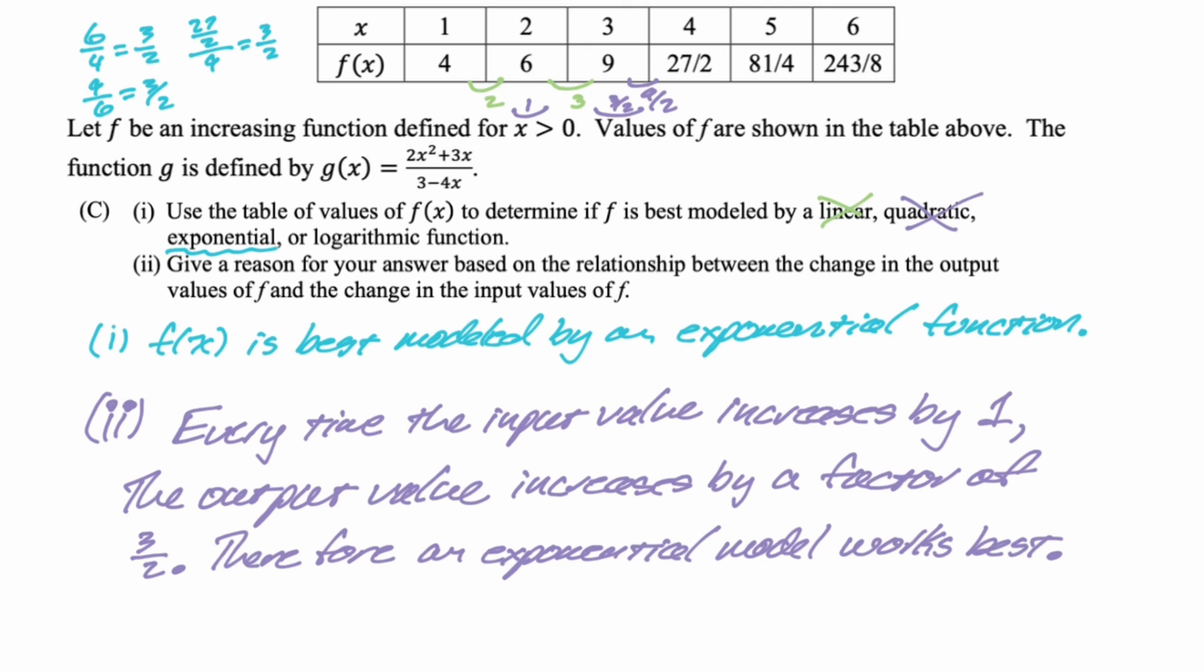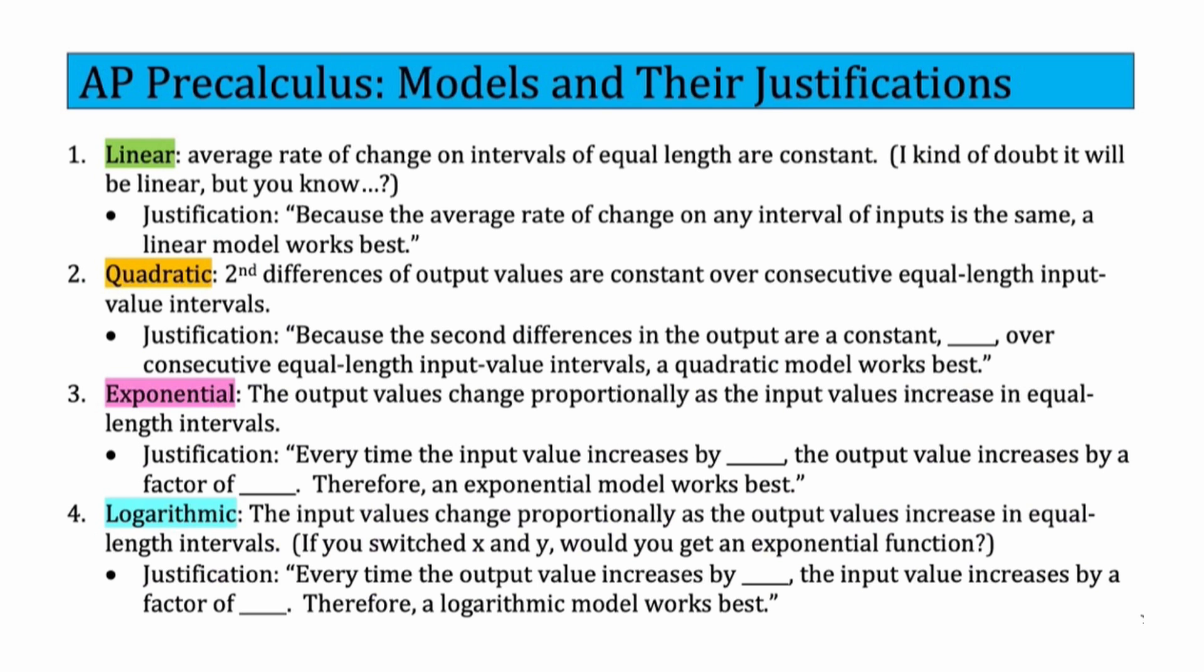I do want to share with you, because I actually think this is the hardest part of this particular FRQ would always be to decide what model it is. So what I did was I made this thing. You could screenshot this or whatever you want to do. These are the models and their justifications. So linear, average rate of change on intervals of equal length. I mean, they say equal length, but it doesn't matter. It would be any interval. But average rate of change will always be the same. So my justification would be, because the average rate of change on any interval of inputs is the same, a linear model works best. I don't think that will ever be the answer, but who knows. For quadratic, we need second differences of the output values are constant.